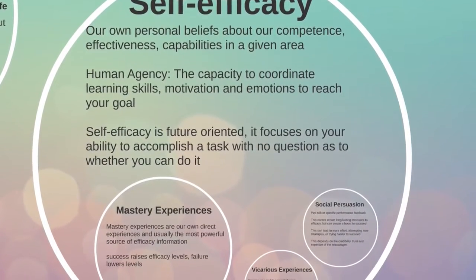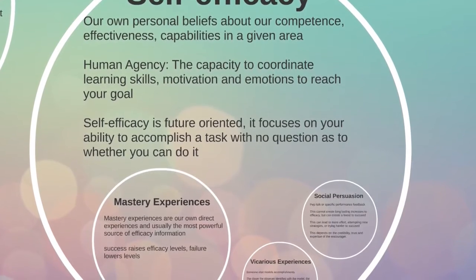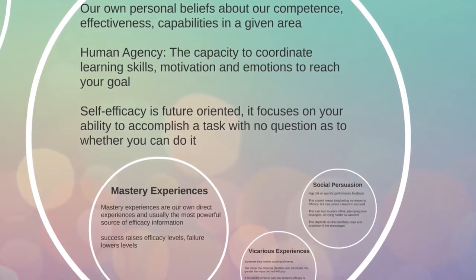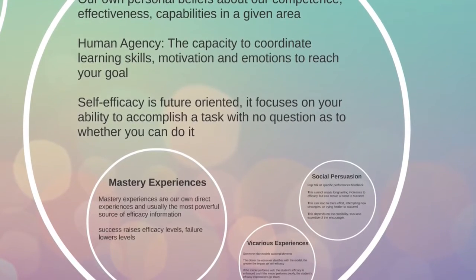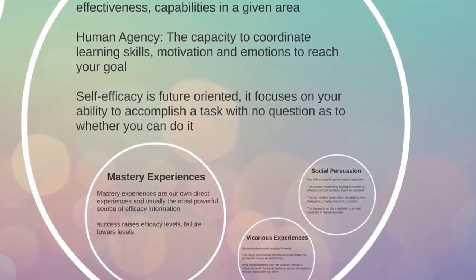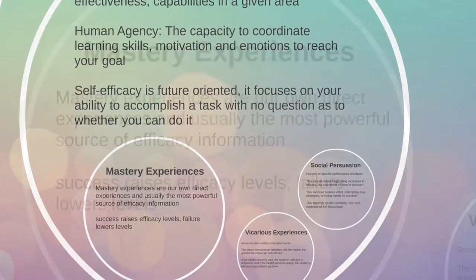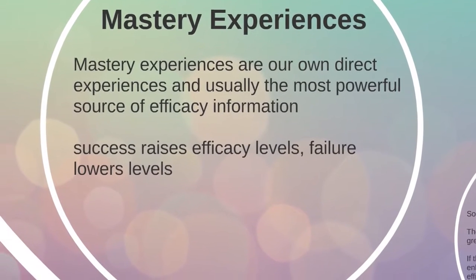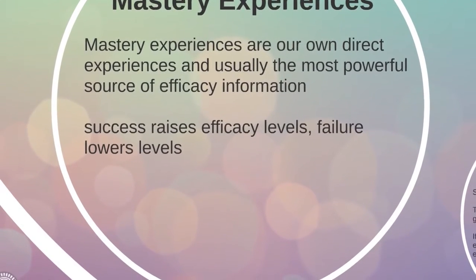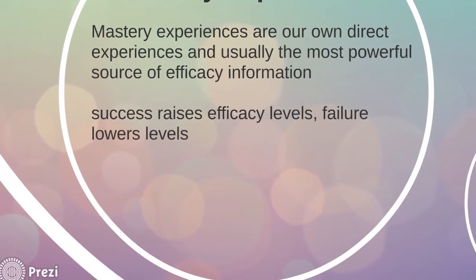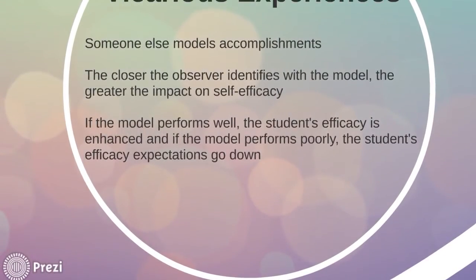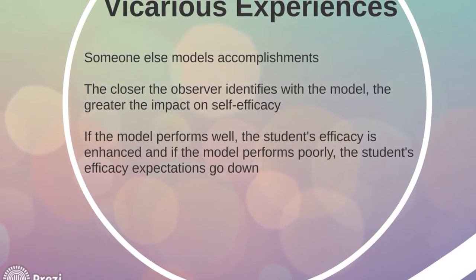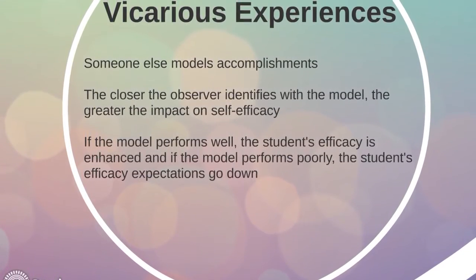The second part of the social cognitive theory is self-efficacy — our own personal beliefs about our competence, effectiveness, or capabilities in a given area. It focuses on your attention to accomplish a task with no question as to whether you can do it. Mastery experiences are our own direct experiences and are usually the most powerful source of efficacy information. Vicarious experiences are the observation of someone else's accomplishments; the closer the observer identifies with the model, the greater the impact on self-efficacy.